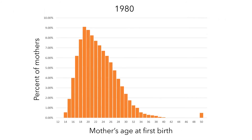Here again is the distribution for the mother's age at first birth in 1980, but with a little modification. It looks like in this altered data, there is a significant number of women who had their first child at age 50. When there are data points that are significantly larger or smaller than the rest of the data and there is a significant gap, we call these data points outliers. There are technical definitions for outliers, but they rely on other summary statistics that we'll look at in later videos.